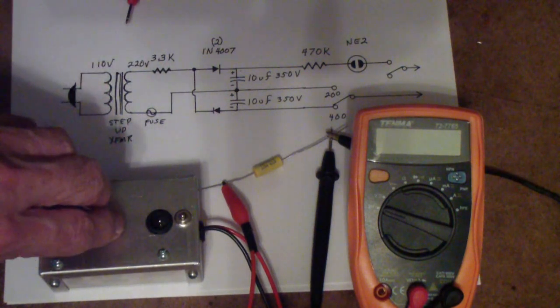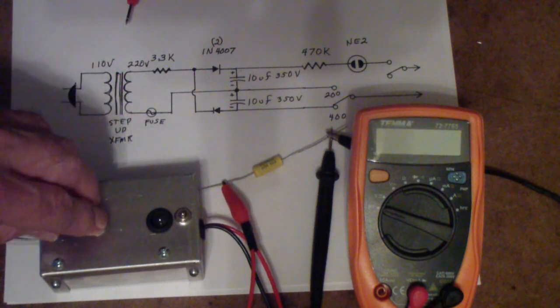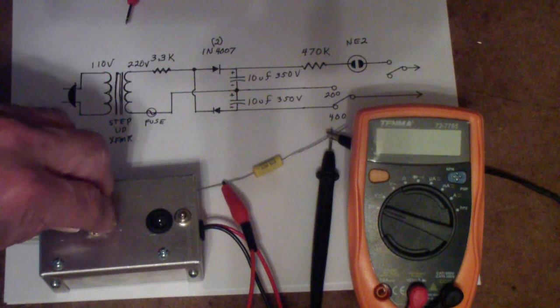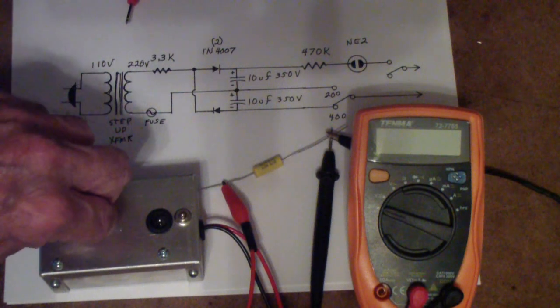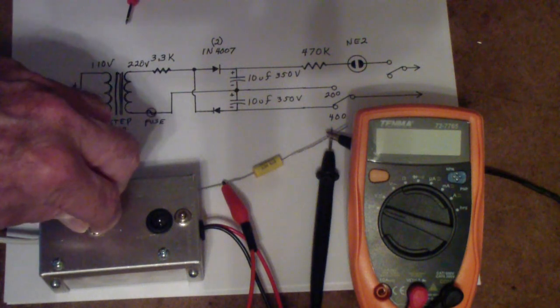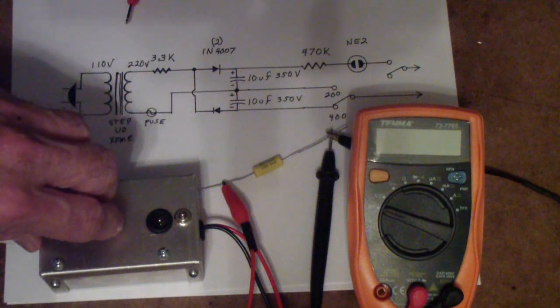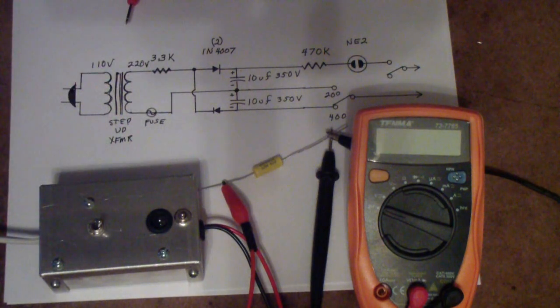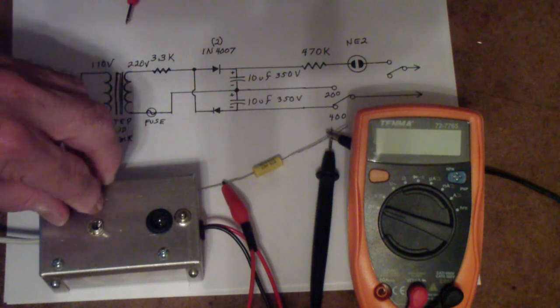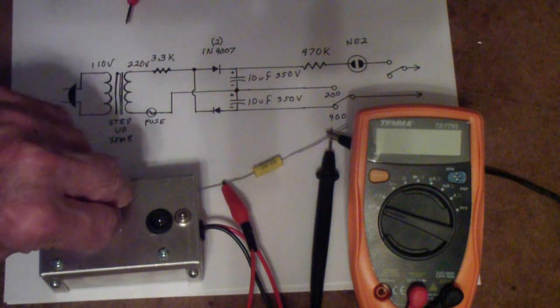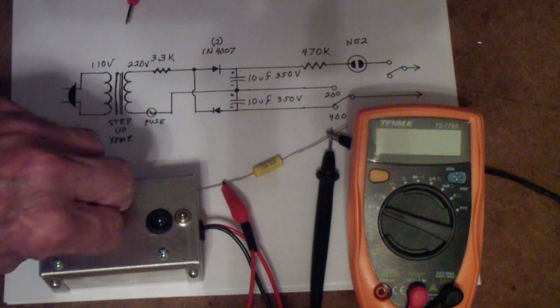You notice that it blinks once. I turn it off. When I turn this off, I'm using a switch that shorts the leads, so it discharges the capacitor. Then I turn it back on and you see it blinks once. If you leave the power turned on, it should not blink again. In other words, a single blink and then off forever is an indication of a good capacitor.